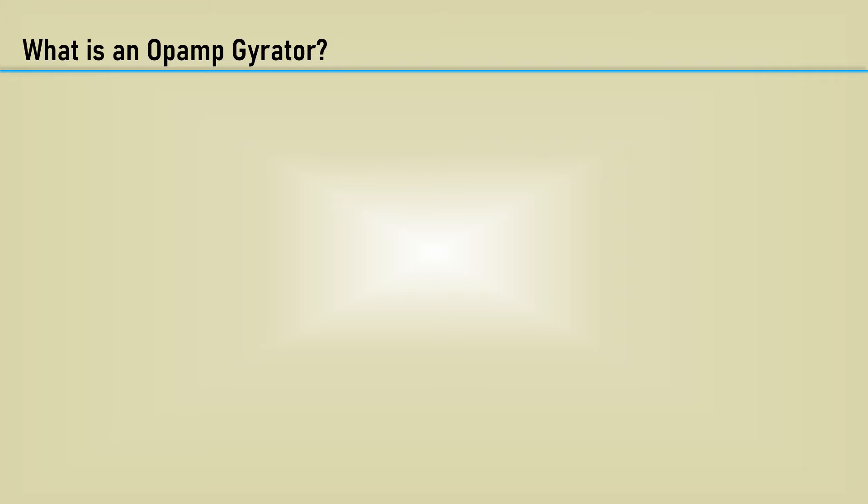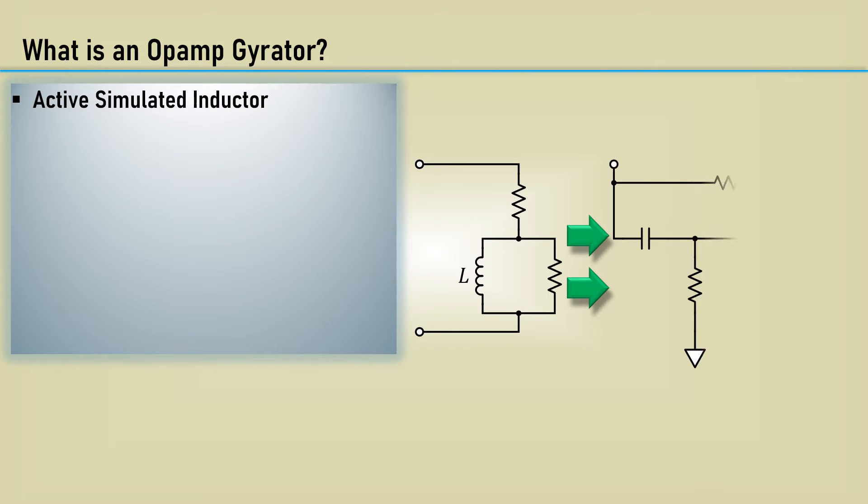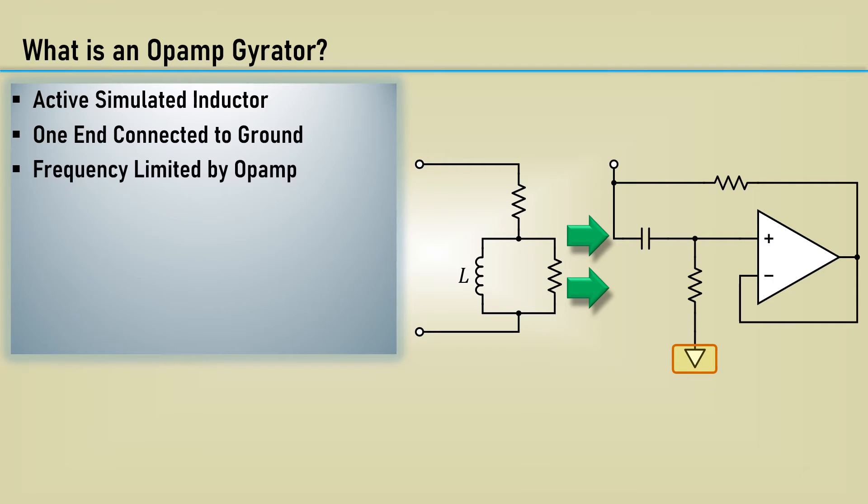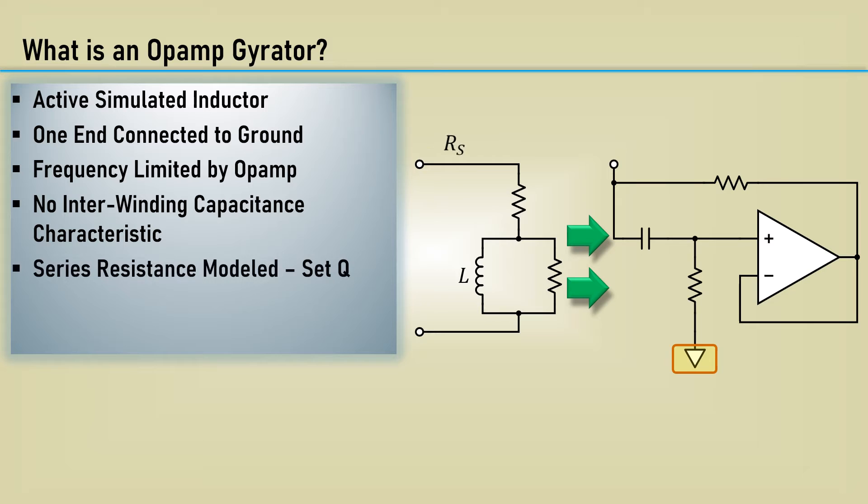What is an op-amp gyrator? It's simply an active simulated inductor. One significant constraint is one end of the simulated inductor is connected to ground. Its frequency of operation is limited by the op-amp, so it cannot be used at RF frequencies. It's more perfect than the inductor, as it has no interwinding capacitance like a real inductor would. The series resistance is included. This is like the effective series resistance of a real inductor.